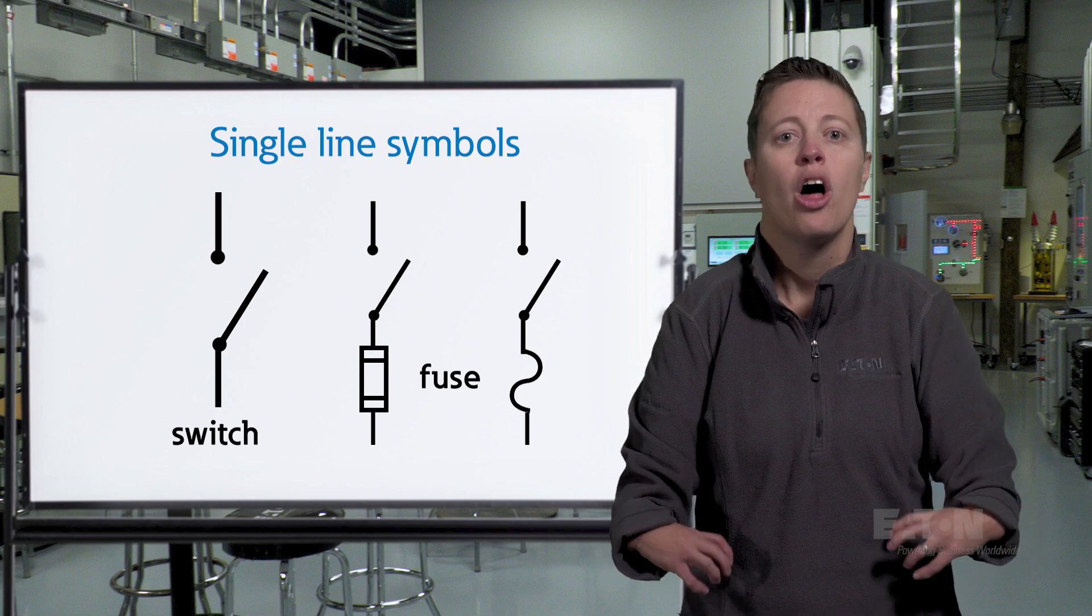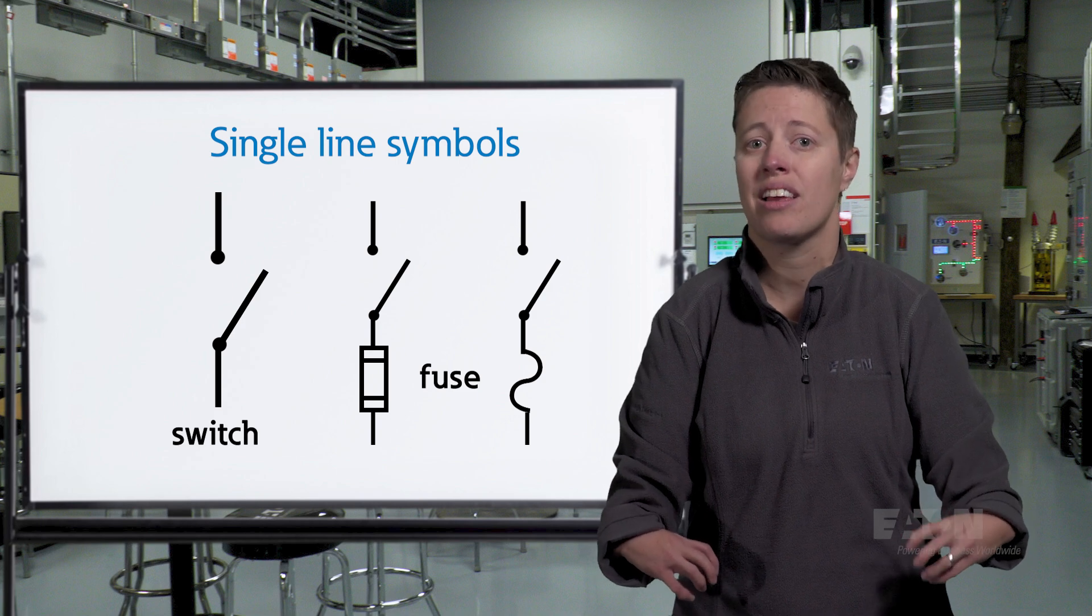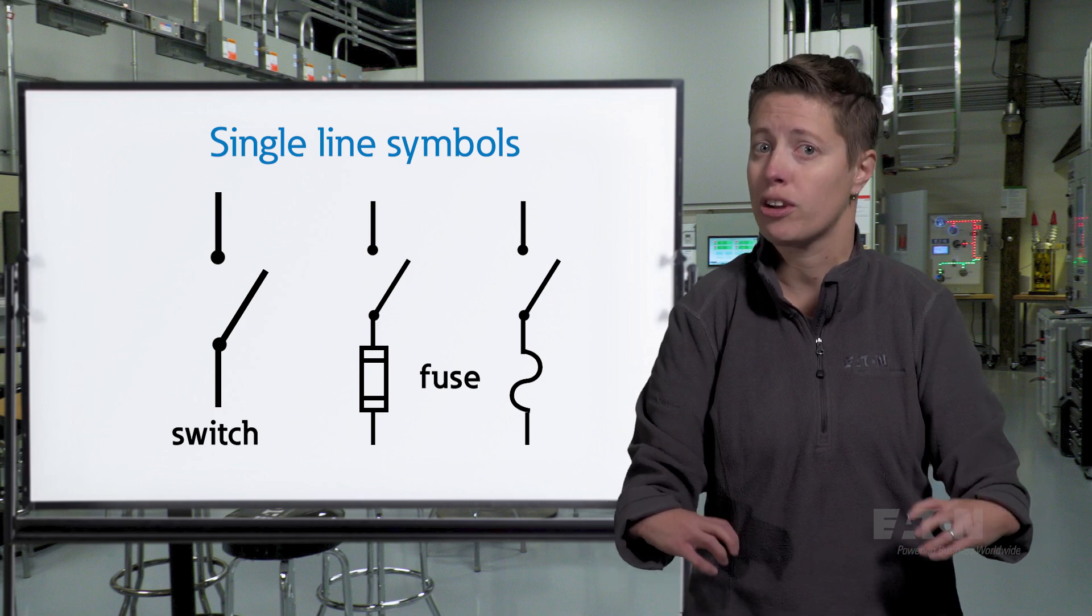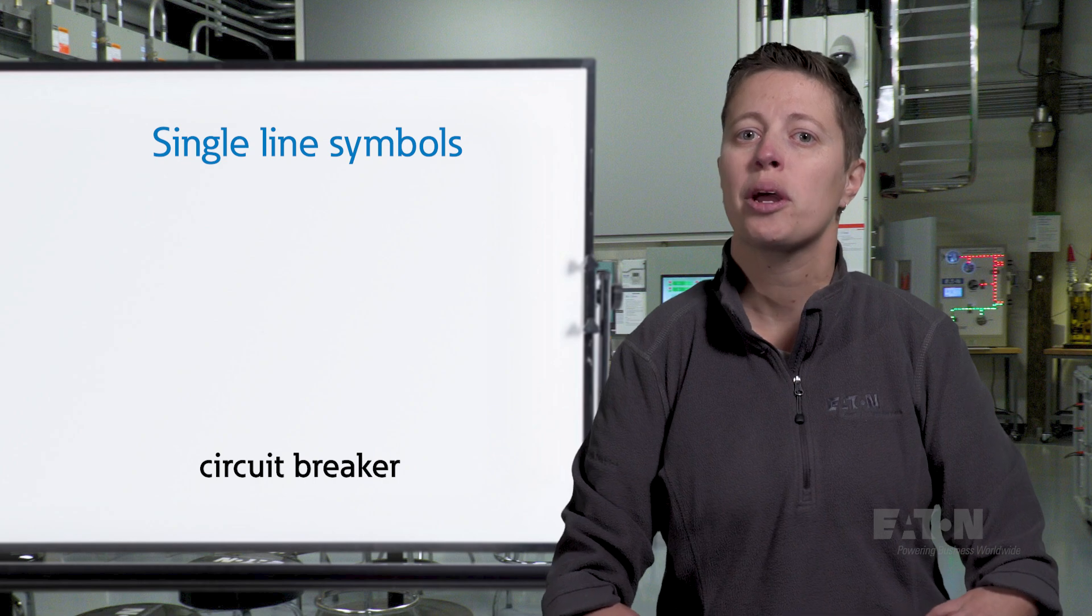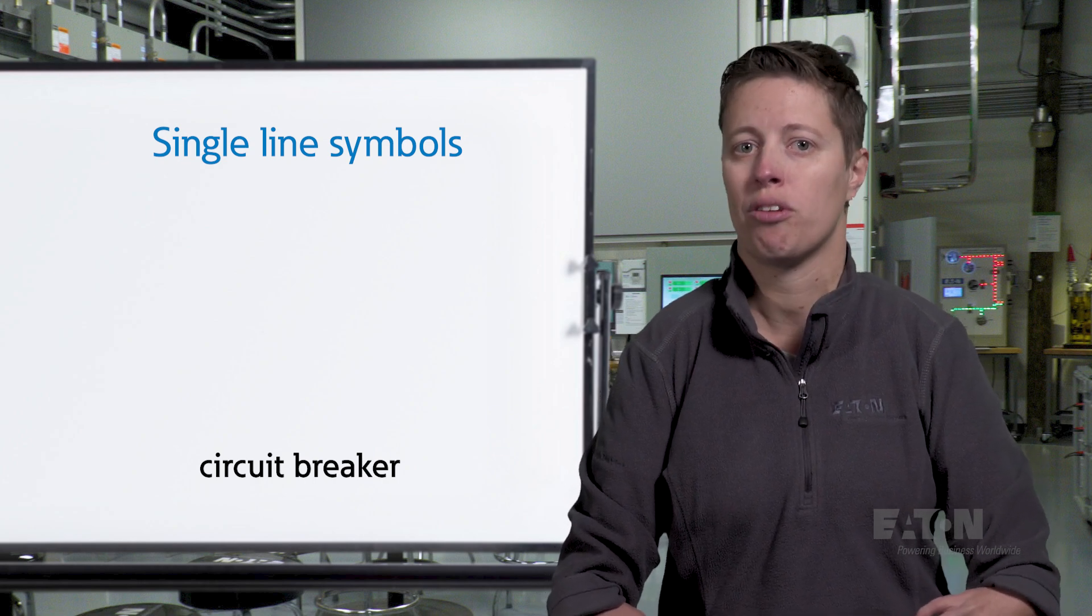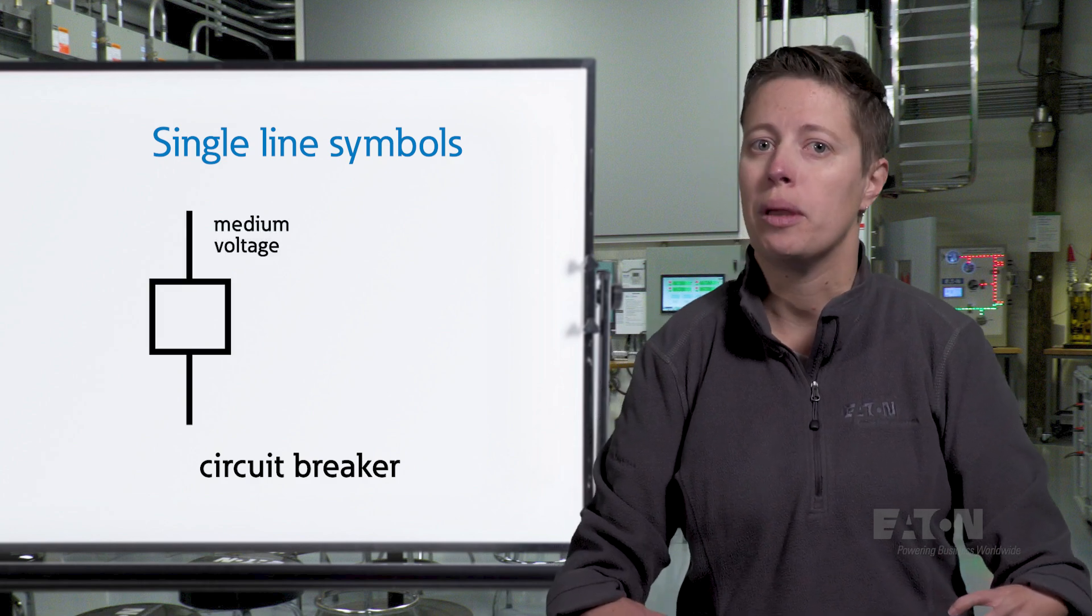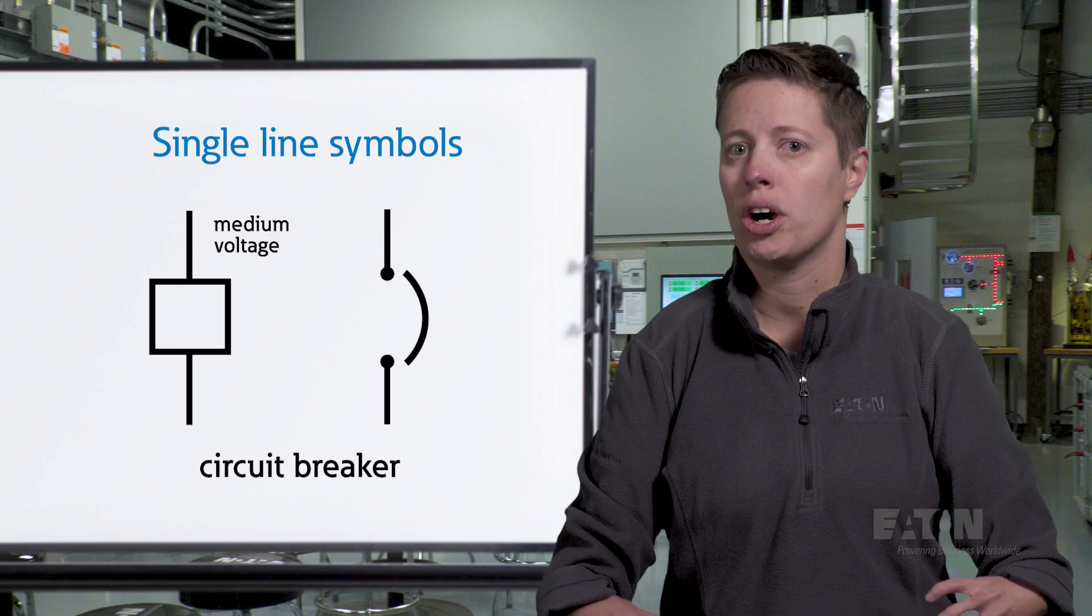Keep in mind, though we're only showing one fuse, a single line drawing represents a complete set of three fuses, one for each of the three phases. A circuit breaker symbol can look a few different ways depending on the type and voltage level. A circuit breaker may be represented by a simple square for a medium voltage breaker or by an arch bridging a gap in the conductor for a low voltage breaker.